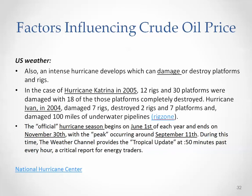In case of a hurricane, there are two possible things that can happen: interruption in production because the site has to be evacuated, or if the hurricane is severe, it can also damage the facility. For example, Hurricane Katrina in 2005 damaged 12 rigs and 30 platforms, and 18 of those platforms were completely destroyed. Hurricane Ivan in 2004 damaged seven rigs, destroyed two rigs, and destroyed seven platforms, causing flooding and other consequences. This can cause supply interruption or the prediction of supply interruption, and when there is an interruption in supply, the price can potentially increase.